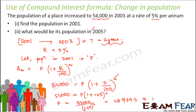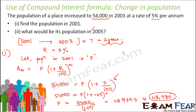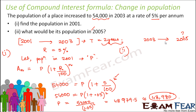This is approximately equal to 48,980. So this was the population in 2001. That is the first part of the problem. The second part asks: what would be its population in 2005? Now we know the population in 2003 and we have to calculate the population in 2005 — that means after 2 years.